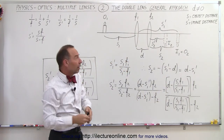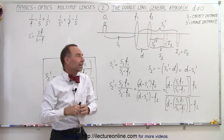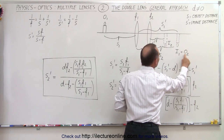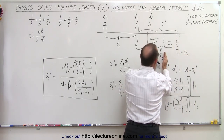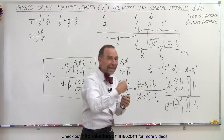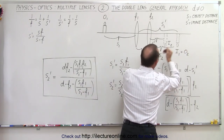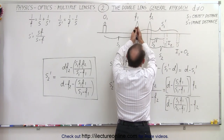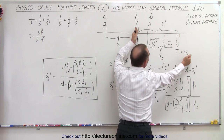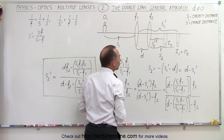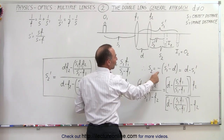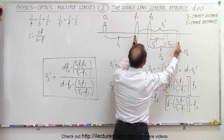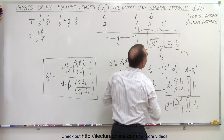Now the first image of the first lens becomes the object of the second lens — so image 1 becomes object 2. This represents the object distance for the second lens, and that's going to be a negative distance because the object is to the right of the lens. The magnitude equals the total distance from the first lens to the image minus d, so s2 is the negative of s1' minus d.